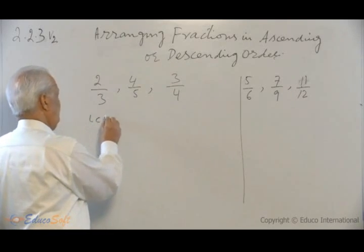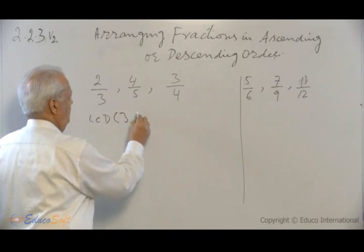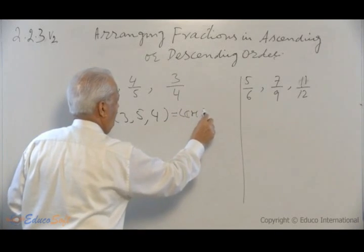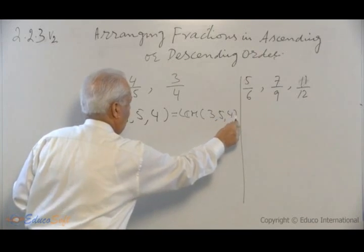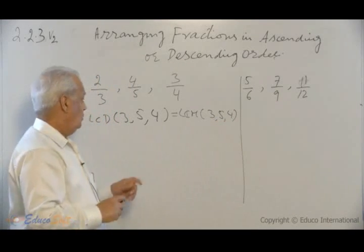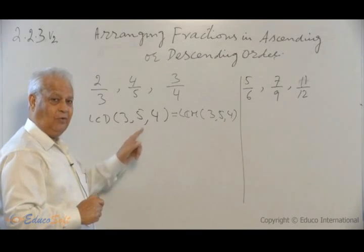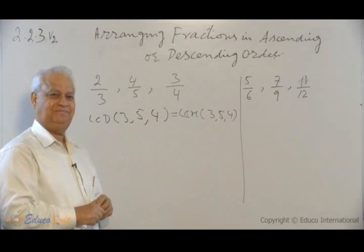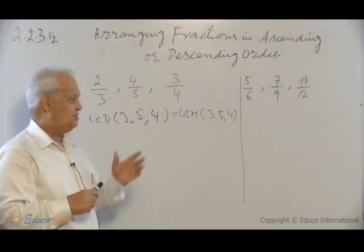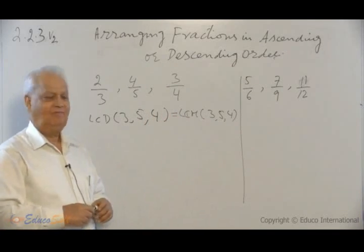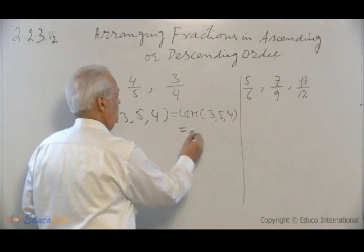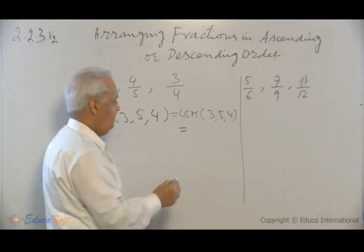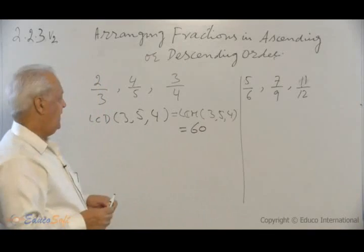So LCD of 3, 5, and 4 is equal to LCM of 3, 5, and 4. And again, watch these three numbers 3, 5, and 4 - there is nothing common between any two of them. All three are mutually prime. In that case, LCD or the LCM is the product of all these numbers. So this will be equal to 3 times 5 is 15, 15 times 4 will be 60. So the LCD is 60.